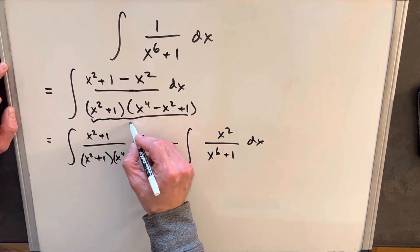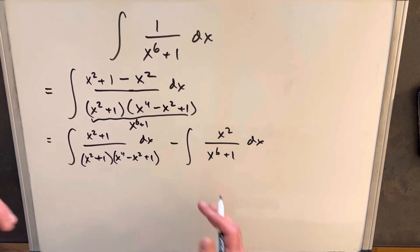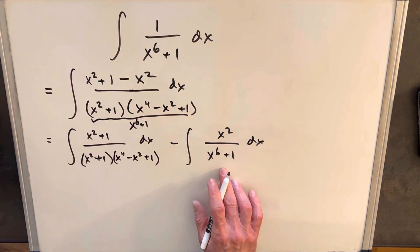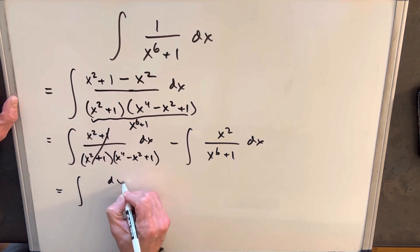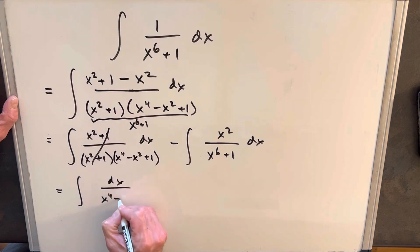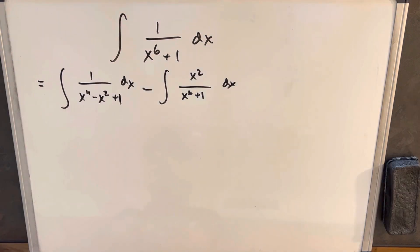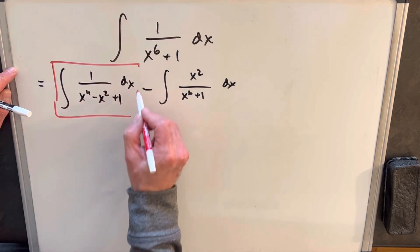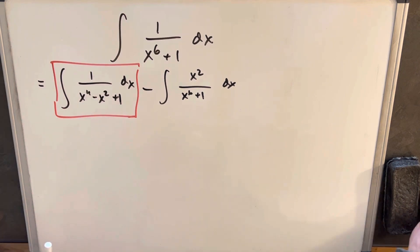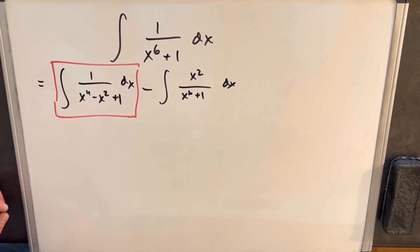We're just undoing the factoring we just did. On the left, we get cancellation, so that integral becomes dx over x to the 4th minus x squared plus 1. From here, I'm going to focus on this left integral for the moment. We're in a similar predicament where we'd like to have something in the numerator but we don't, so we need to create something to make this work.